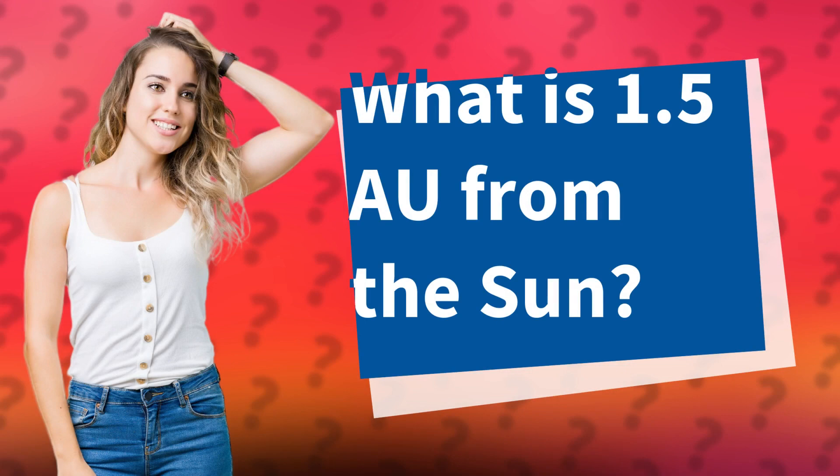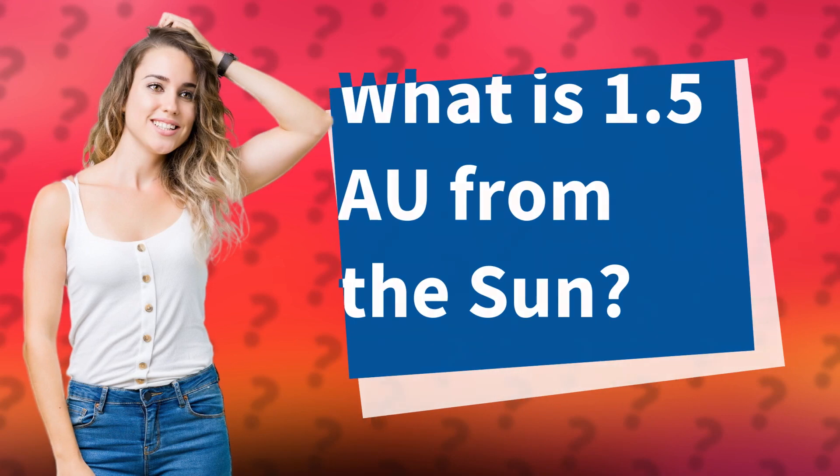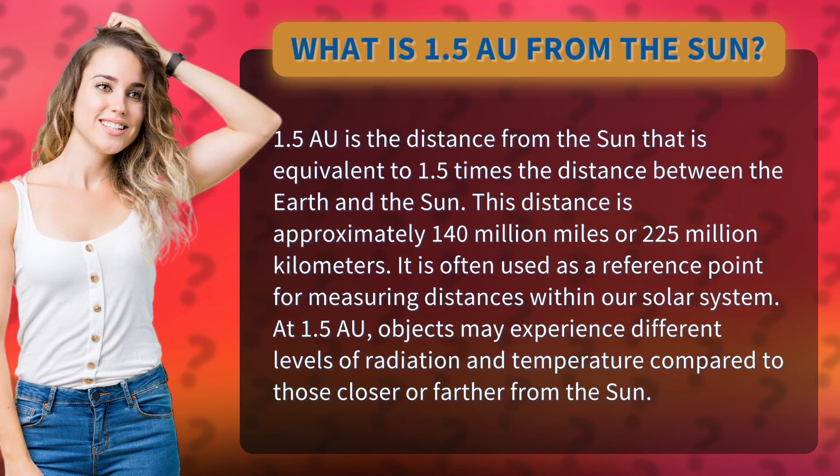What is 1.5 astronomical units from the sun? 1.5 astronomical units is the distance from the sun equivalent to 1.5 times the distance between the Earth and the sun. This distance is approximately 140 million miles or 225 million kilometers. It is often used as a reference point for measuring distances within our solar system.